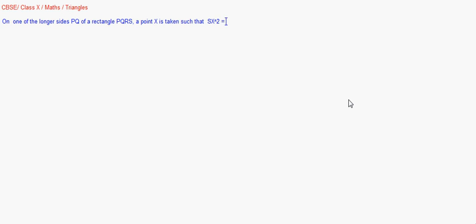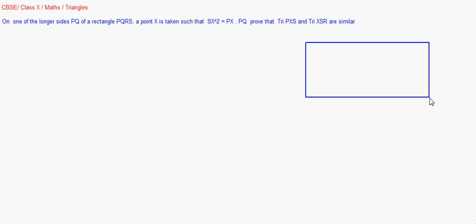We will draw the figure. A point X is taken such that SX squared is equal to PX into PQ. Prove that triangle PXS and triangle XSR are similar. So let us draw a rectangle which is PQRS.